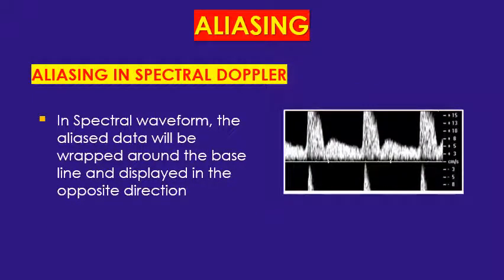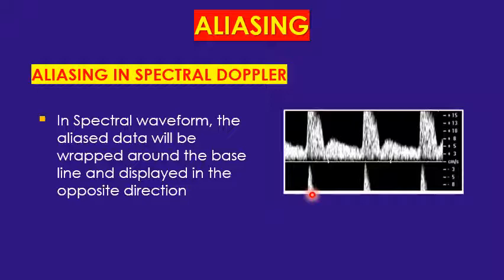How does aliasing look in the spectral waveform? The waveform is clipped off at the top — the peak velocities are cut off and wrap around, appearing below the baseline in the opposite direction. That is how you can diagnose aliasing: part of the waveform is clipped off and wraps around below the baseline.